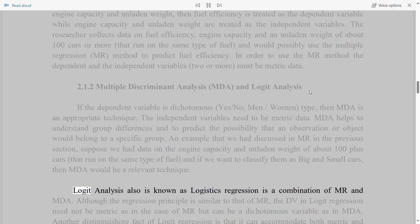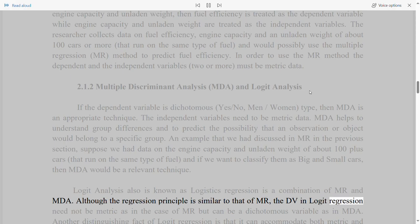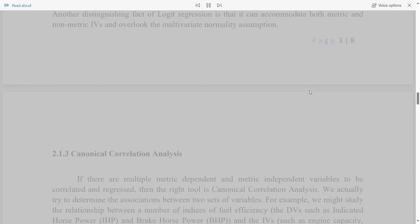Logit analysis also is known as logistic regression is a combination of MR and MDA. Although the regression principle is similar to that of MR, the DV in logit regression need not be metric as in the case of MR, but can be a dichotomous variable as in MDA. Another distinguishing fact of logit regression is that it can accommodate both metric and non-metric IVs and overlook the multivariate normality assumption.